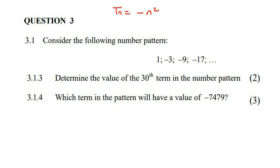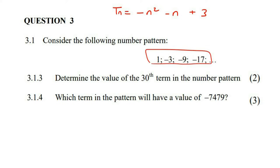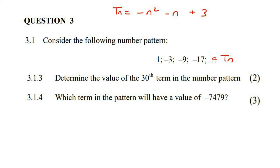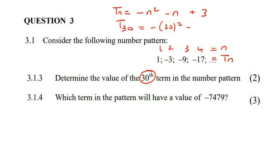Let's just remember what our formula was: negative n squared, take away n, add 3. The next part says: determine the value of the 30th term. Now, some learners don't know whether to plug 30 here or in the place of n. The position numbers are n values — 1, 2, 3, 4. They're saying it's the 30th term, so that's an n value. You plug 30 into the place of n. So t30 equals negative 30 squared, minus 30, plus 3. That gives you negative 927.